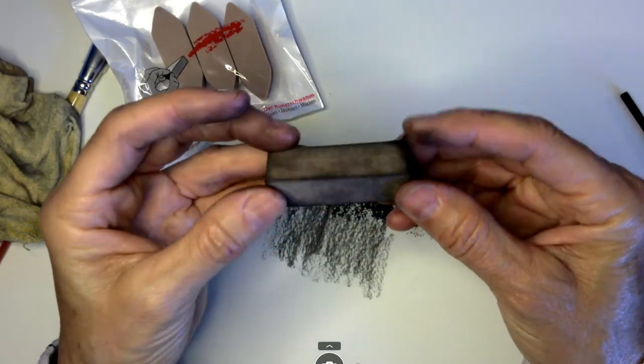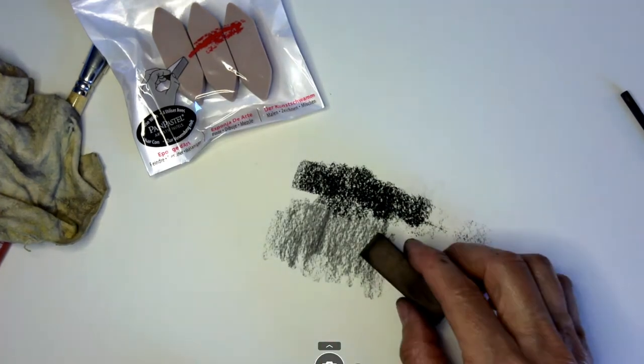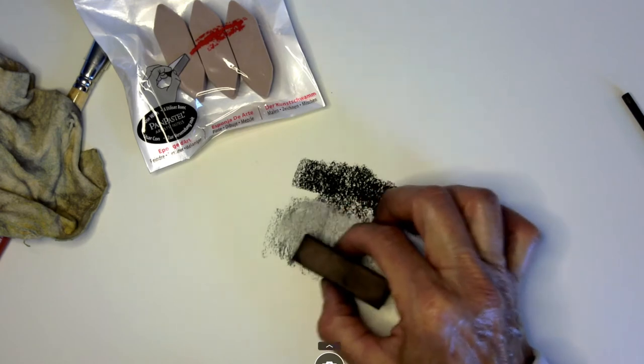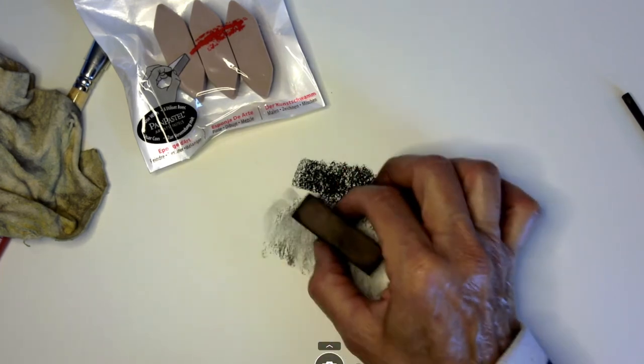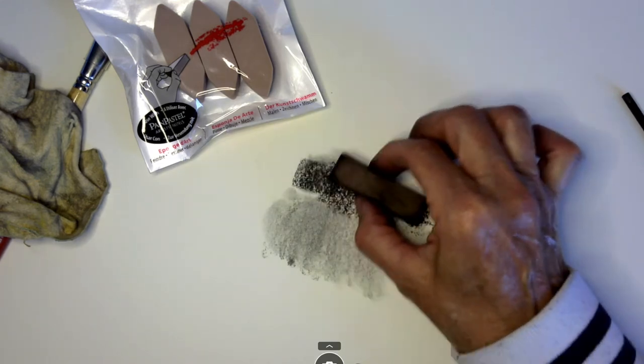This one is lightly dirty. Watch what happens when I delicately glide across the willow—see how it lifts it up and spreads it around. Watch what happens with the compressed charcoal. A similar thing happens, but willow spreads out a little easier.